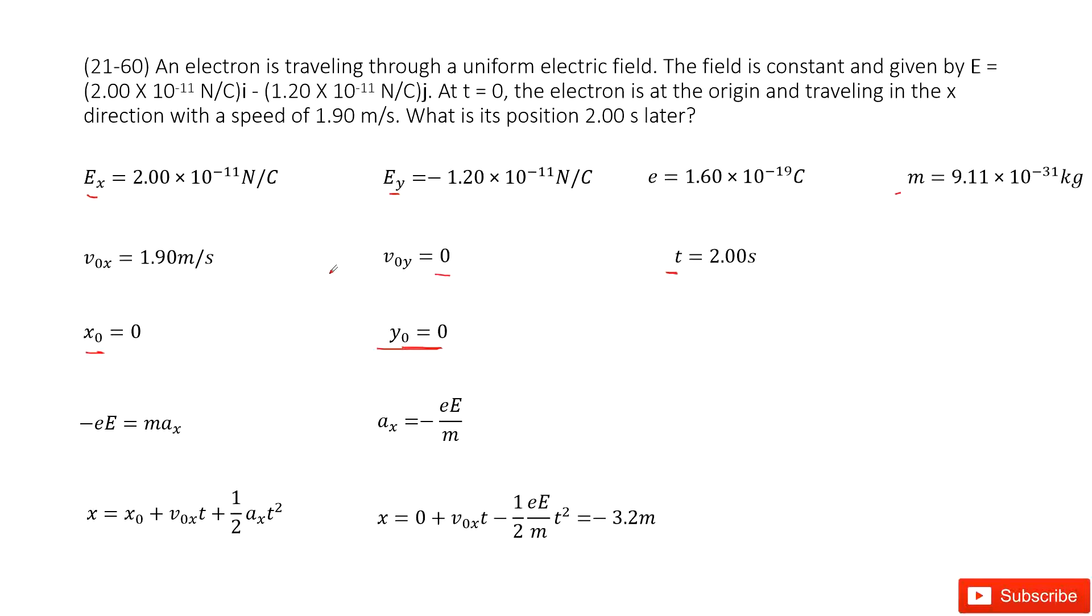You can see for the x component, we know the initial speed and we know the time. It looks like we must find the acceleration in the x component. So we look at the x component, we can see E and Ex. The net force for electrons in an electric field is electric force.